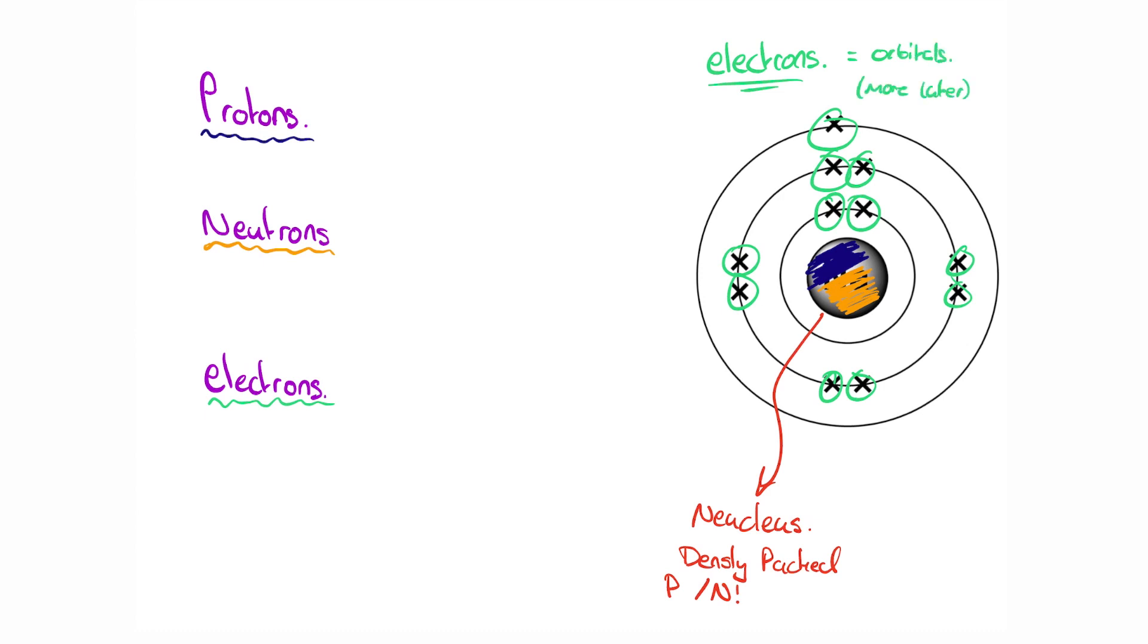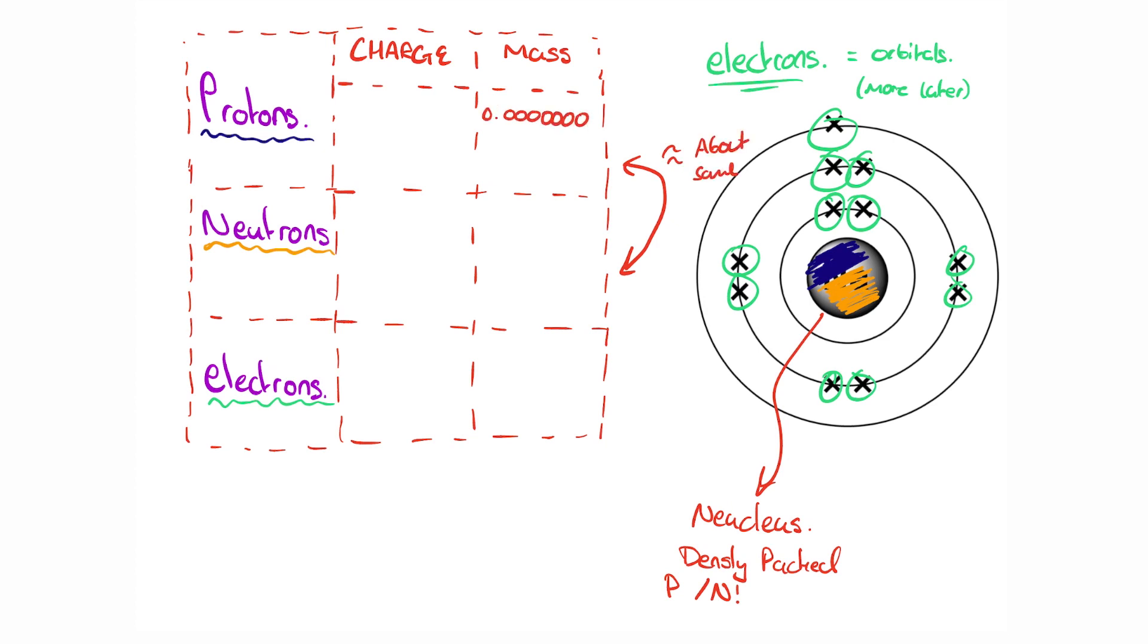These different particles have different properties, charge and mass. They're the things you need to know about. The mass of a proton and neutron is very similar. In kilograms, the sort of unit you'd be used to, it's zero point and then 16 zeros, one six seven kilograms. That is insanely small. An electron is 2,000 times smaller than even that number in terms of mass.